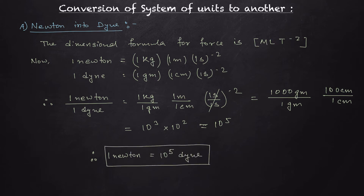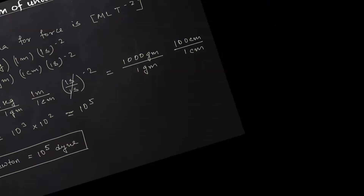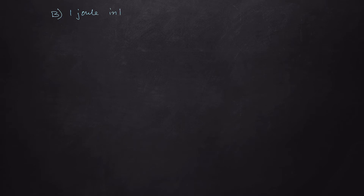So this is the conversion from the MKS system to the CGS system for force. Now let's see another example — let's convert one joule into erg.